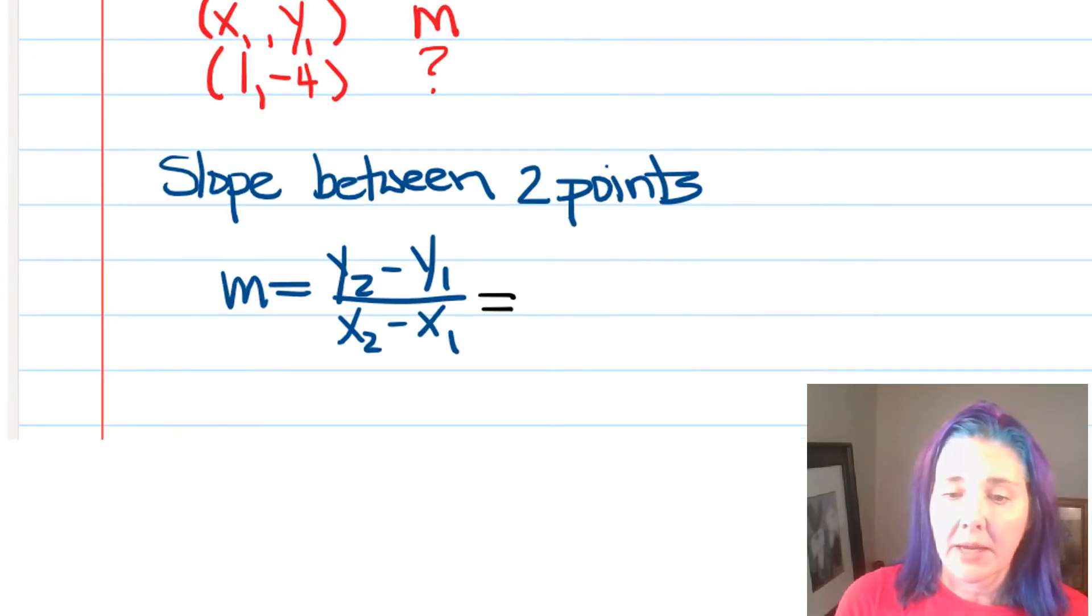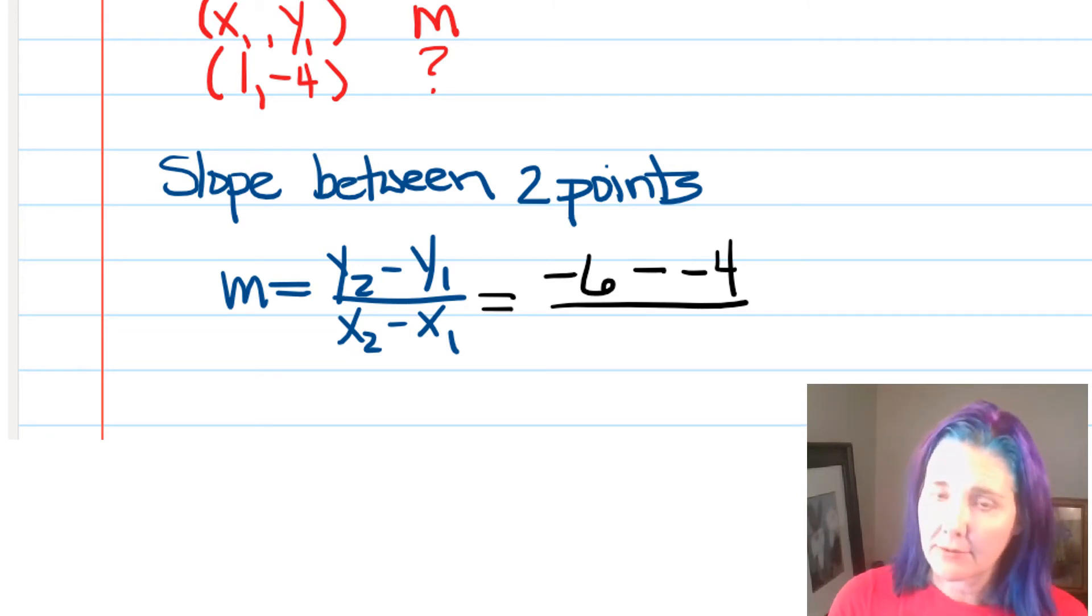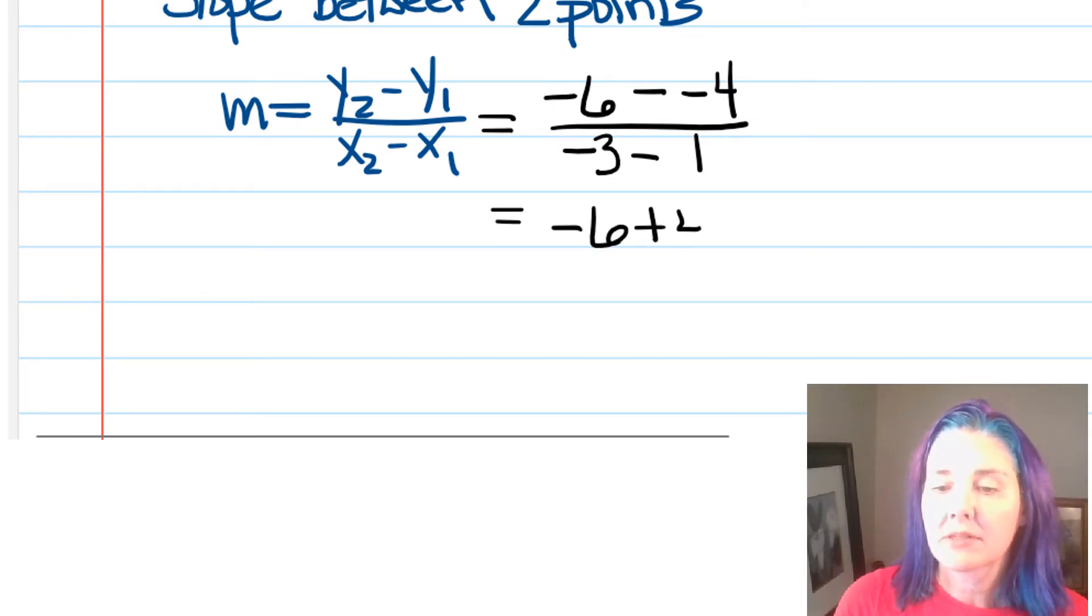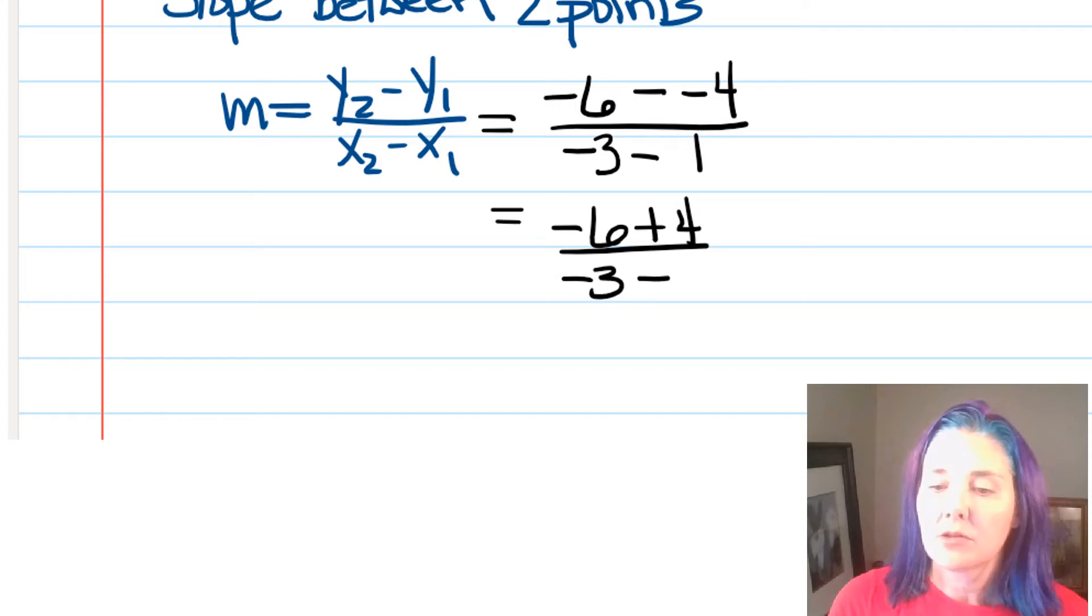So, I'm going to plug into my slope formula and find m. y₂ is going to be -6 minus y₁ is -4. Be careful with those negatives. There's a subtraction in the formula and a negative on the 4, so we actually have two minus signs there. x₂ - x₁ is going to be -3 minus 1. So, this is the same as adding -6 to 4. Minus and minus is a plus, and subtracting 1 on the bottom. This is going to be -6 + 4 = -2. -3 - 1 = -4. We always reduce fractions to lowest terms. A negative divided by a negative is a positive, and so our slope is going to be positive 1/2.